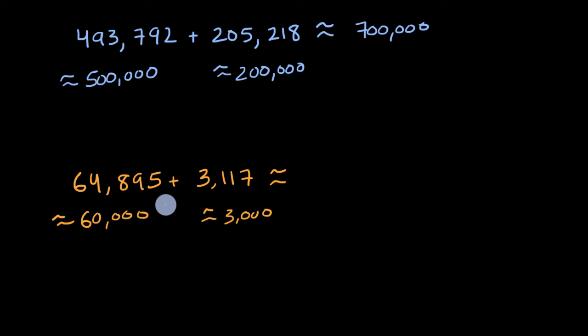And the reason why we're getting that strange estimation is because if we're rounding one to the nearest 1,000, we should round the other to the nearest 1,000. So let's not do it this way. Let's round them both to the nearest 1,000.